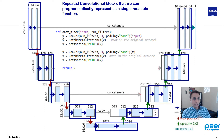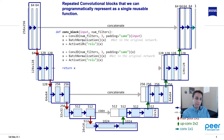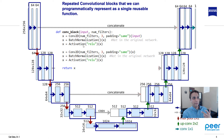Step one: define the convolution block. Our convolution block is Conv2D, followed by batch normalization — which helps with convergence — and then ReLU activation. The rectangle labeled '64' in the diagram corresponds to this: Conv2D with a 3×3 filter size, batch normalization, and ReLU activation. Then a second identical operation: Conv2D, batch normalization, activation. That's the convolution block.